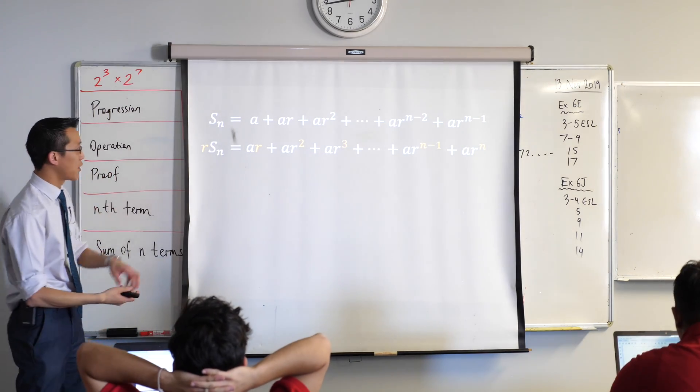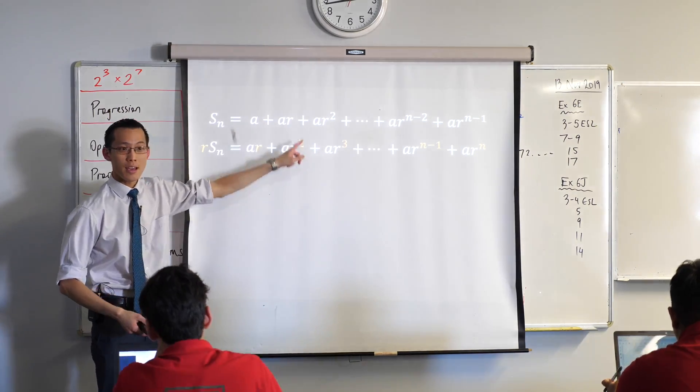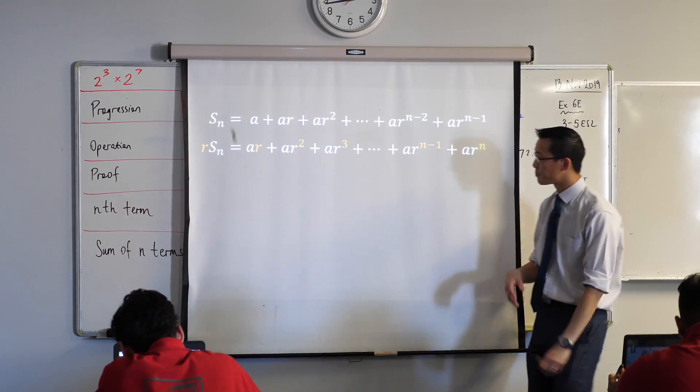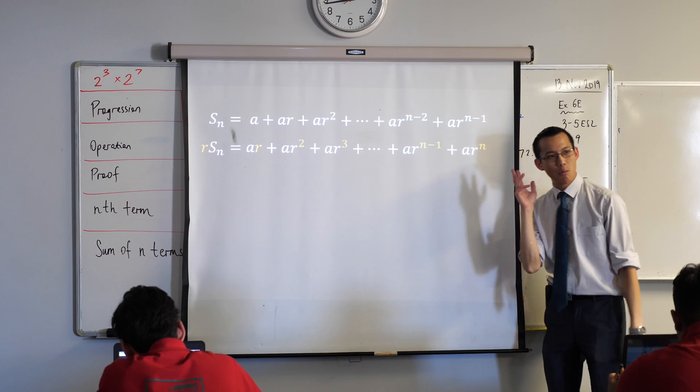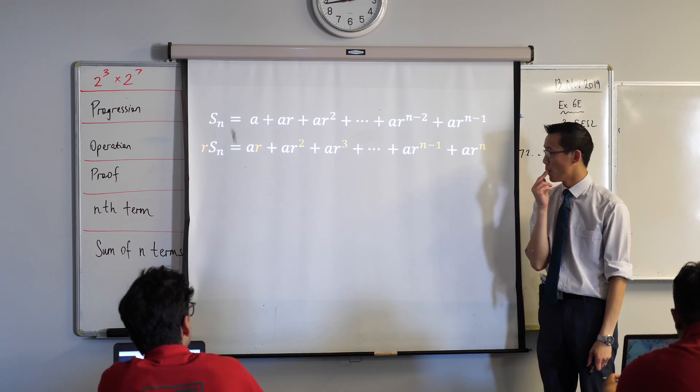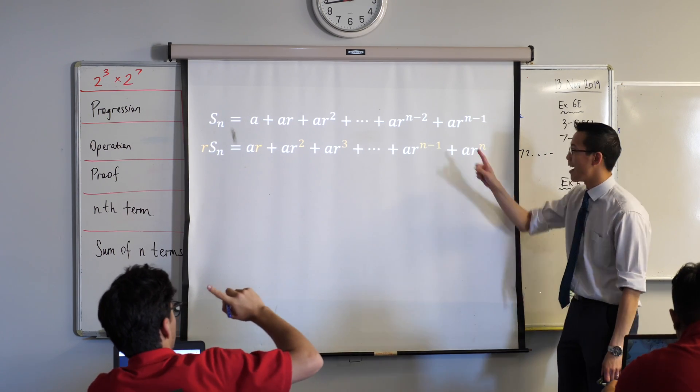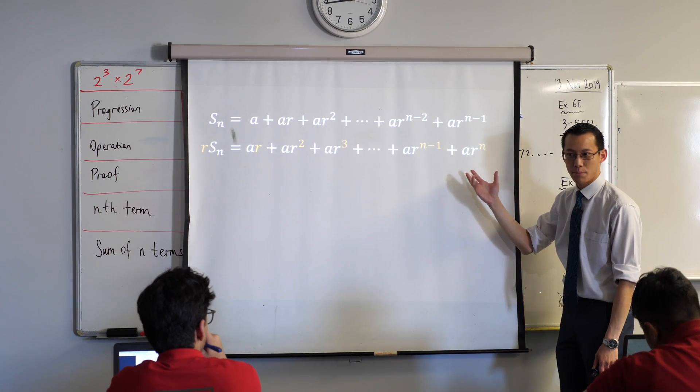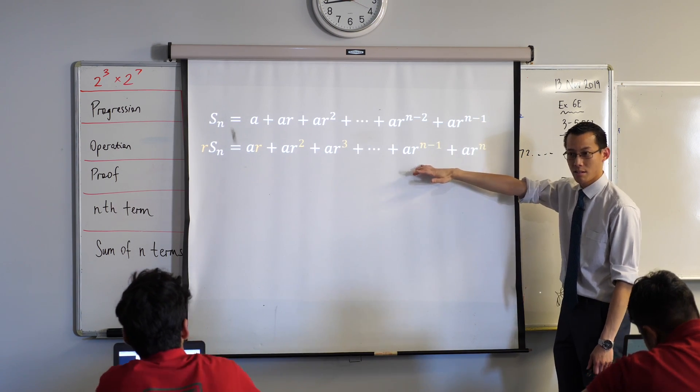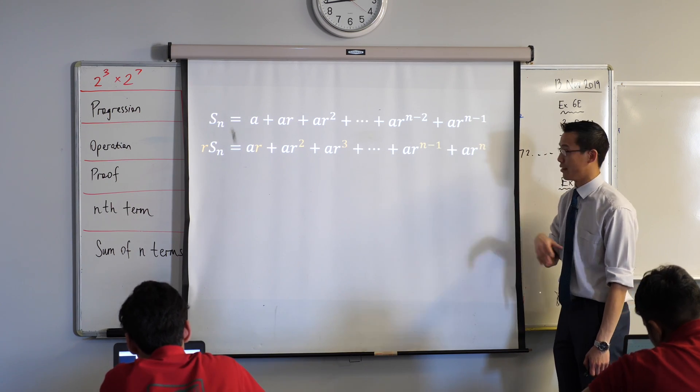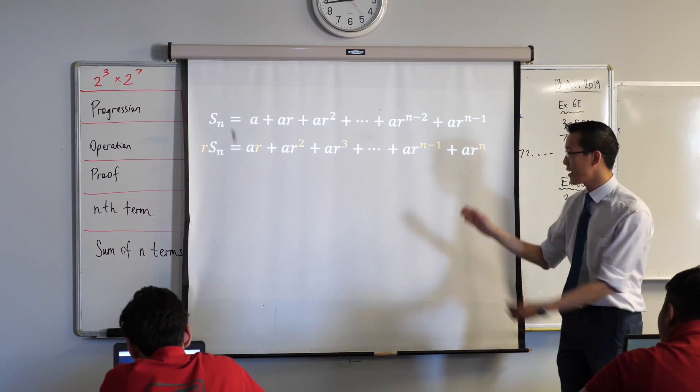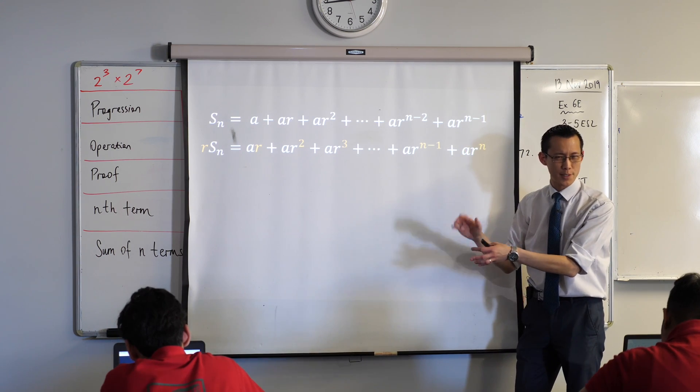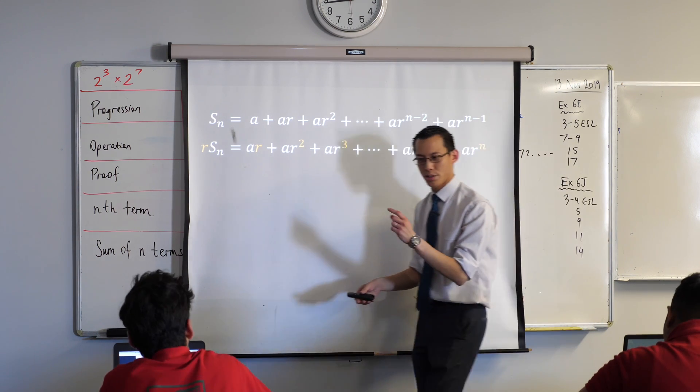So every term you can see the index of r is just sort of pushed up 1. Now why is this useful to me? Perhaps you're seeing why I wanted this extra term here. Do you see some commonalities between the first line and the second line? I hope you see a lot of commonalities.